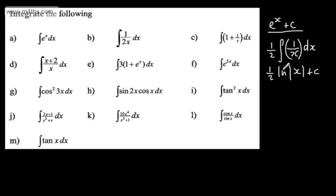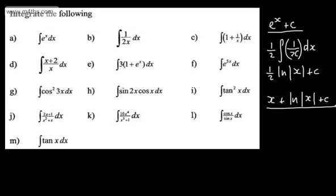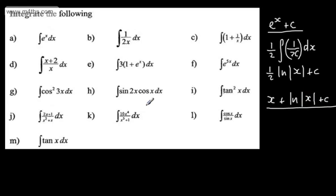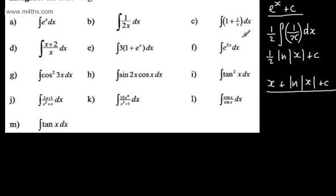If you say to yourself, what does the natural log of x differentiate to give? It gives me 1 over x. So quite clearly, we can see the relationship between the derivative and the integral. With this one, we can just do it term by term. So if I'm looking at the integral of 1 plus 1 over x with respect to x, integrating 1 is just going to give me x. We've already seen that integrating 1 over x will be the natural log of the modulus of x, and then we just add a constant.